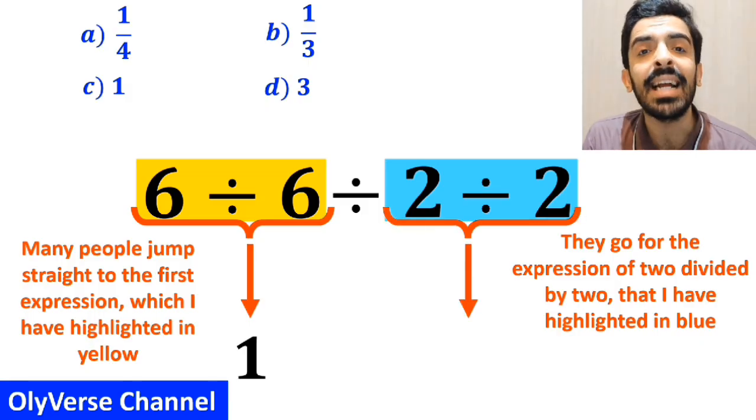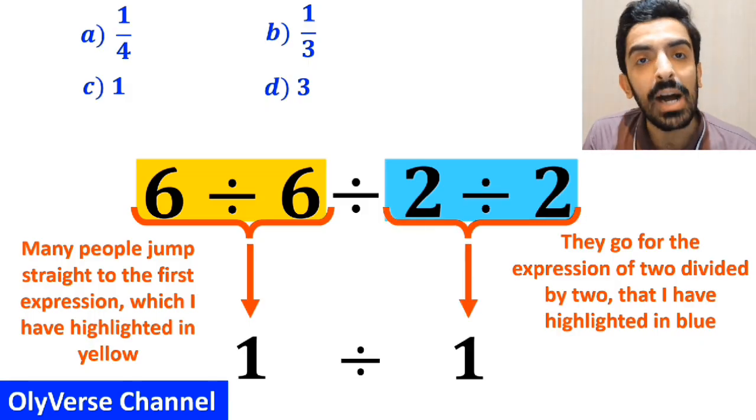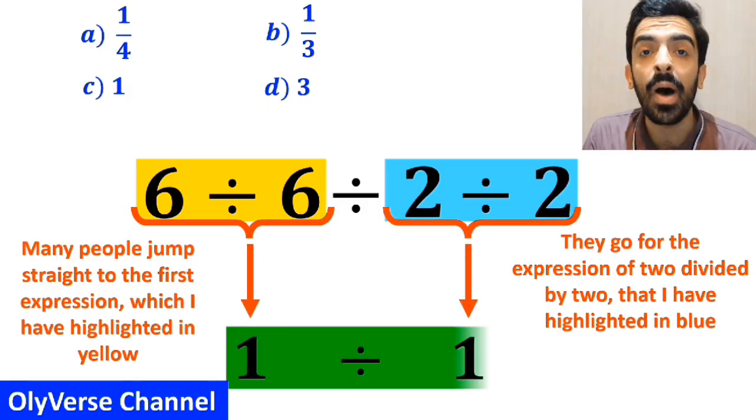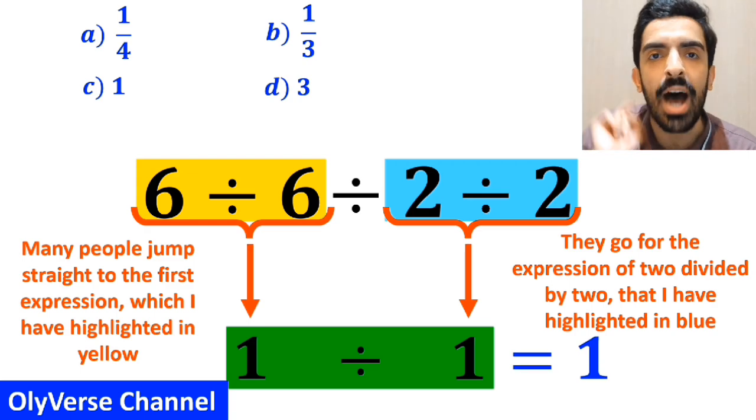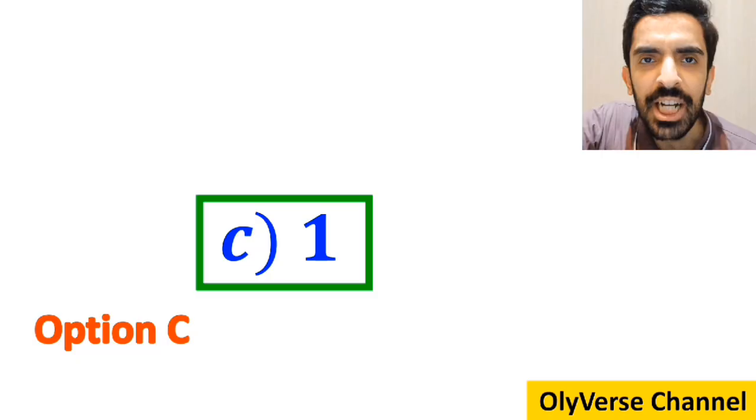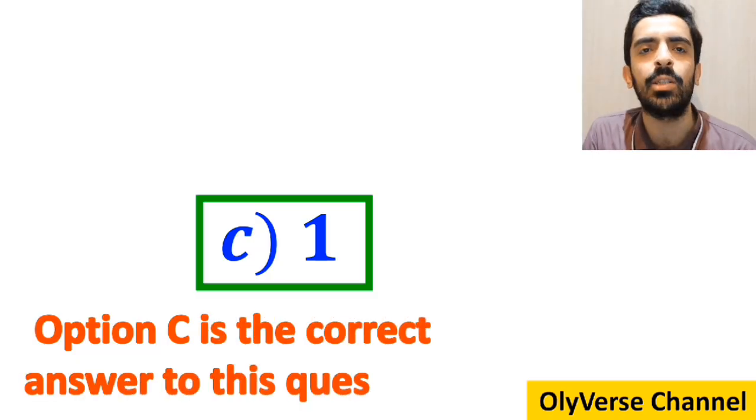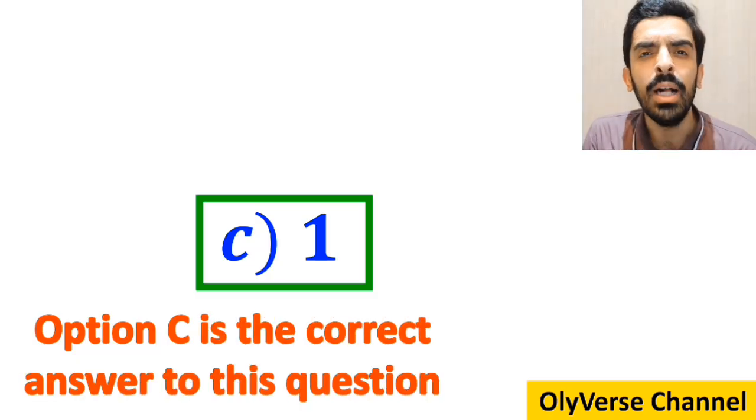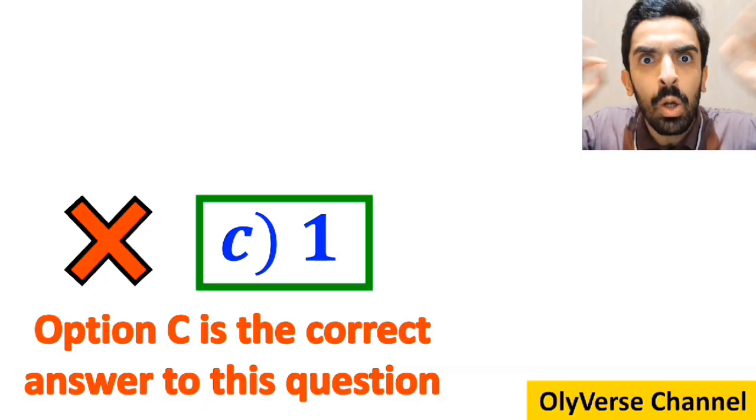Which I have highlighted in blue, and again replace it with 1. Finally, they conclude that 1 divided by 1 is equal to 1. Then, without any hesitation, they quickly say that option C is the correct answer to this question. However, this answer is absolutely wrong.